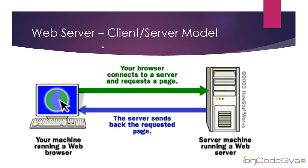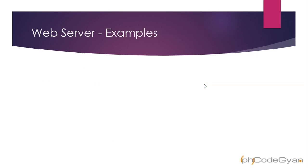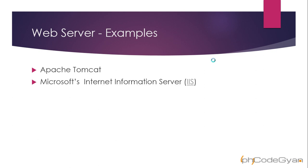Let's see the client-server model. As you can see, this is your PC running a web browser and then you have a server machine. When you click on any button on your web browser, you send a request to the web server for any resource. The web server sends that resource back as a response to the web browser on your PC, which is then displayed on your browser. Examples of web servers include Apache Tomcat, Microsoft Internet Information Server, Nginx, and Google Web Server.